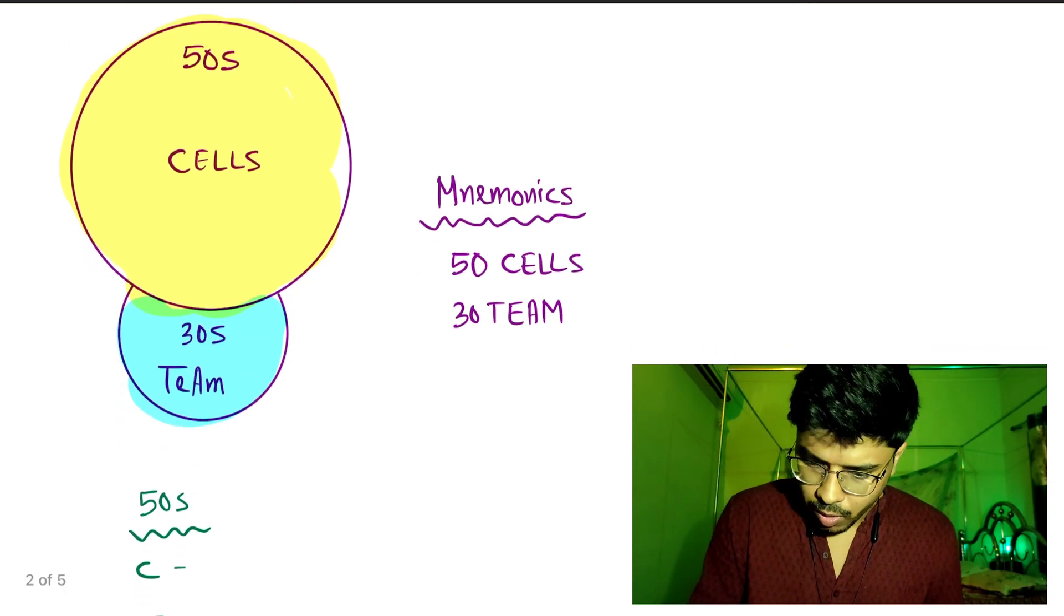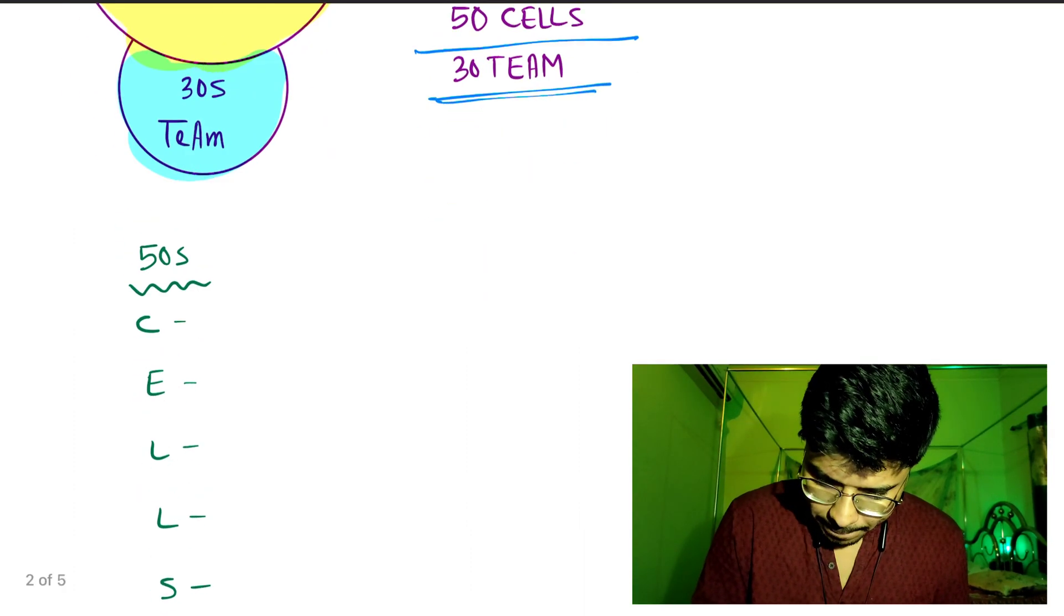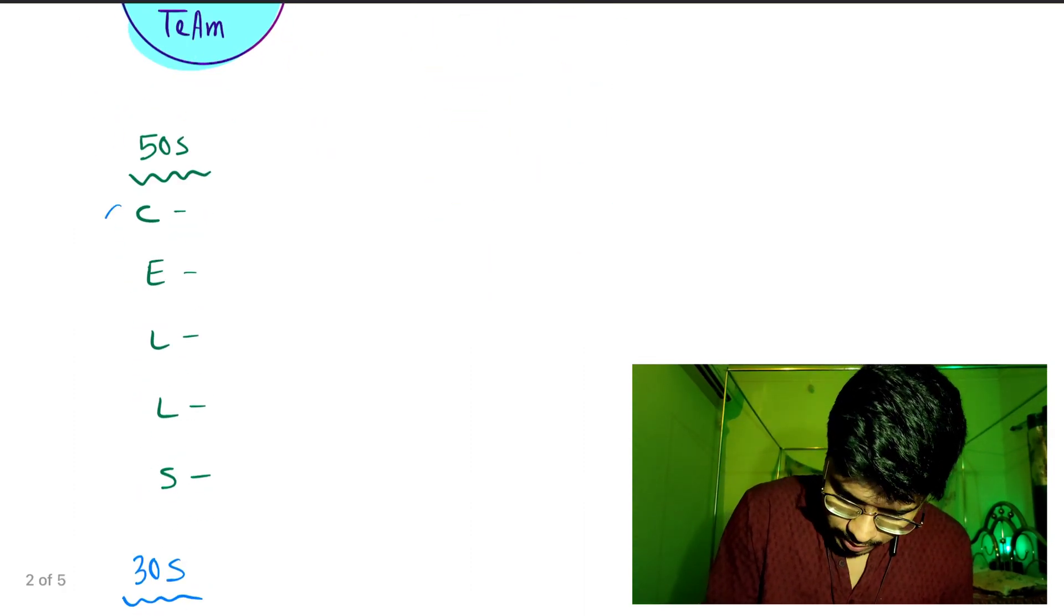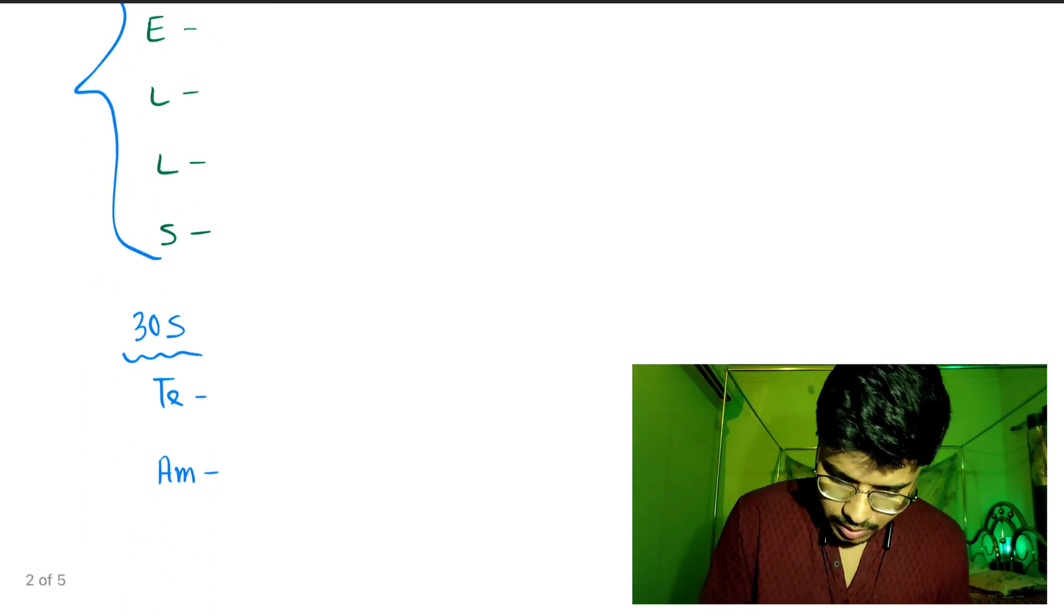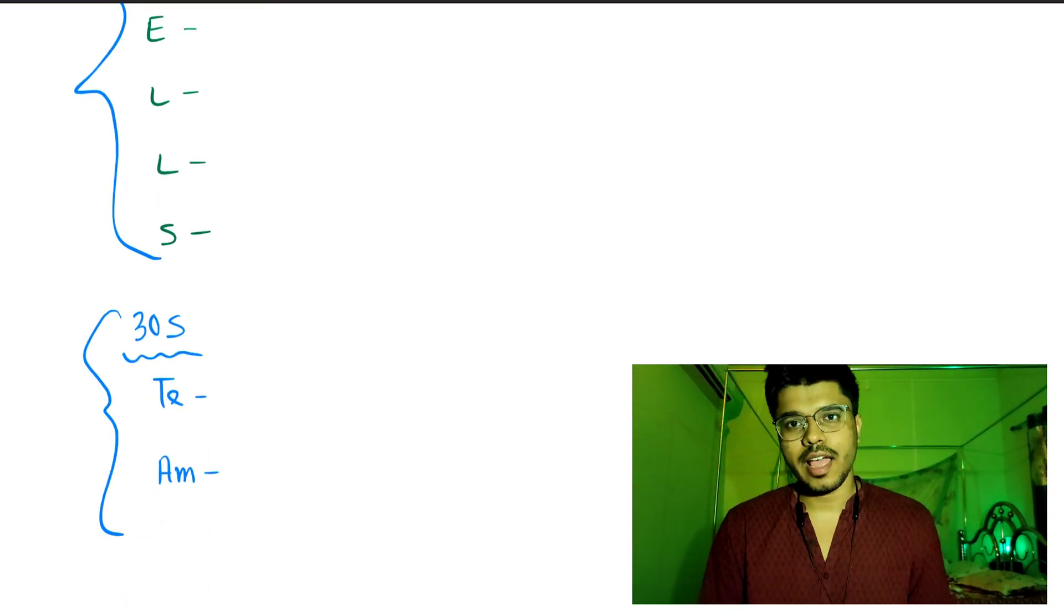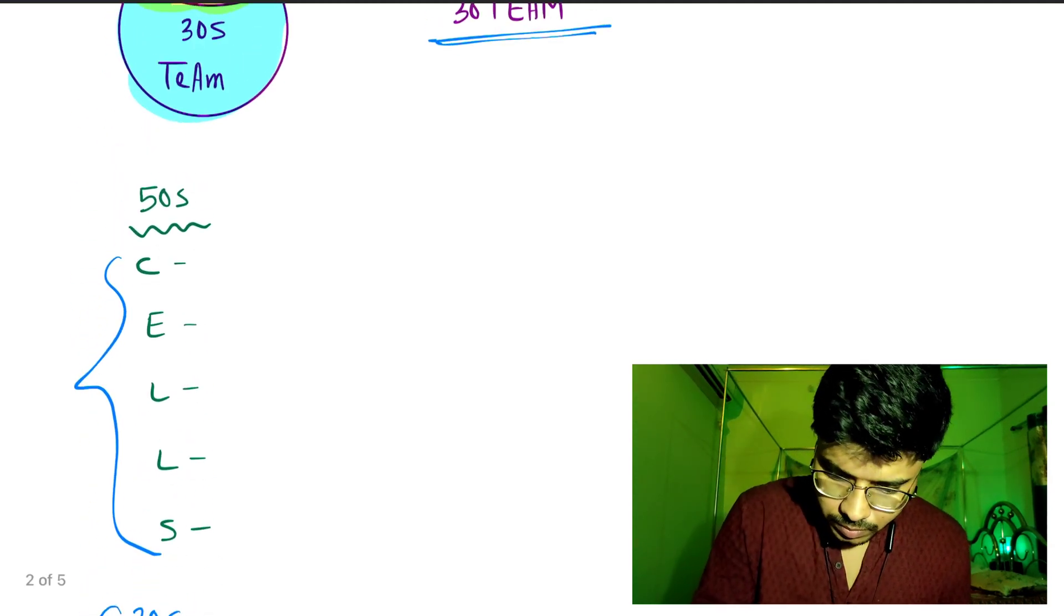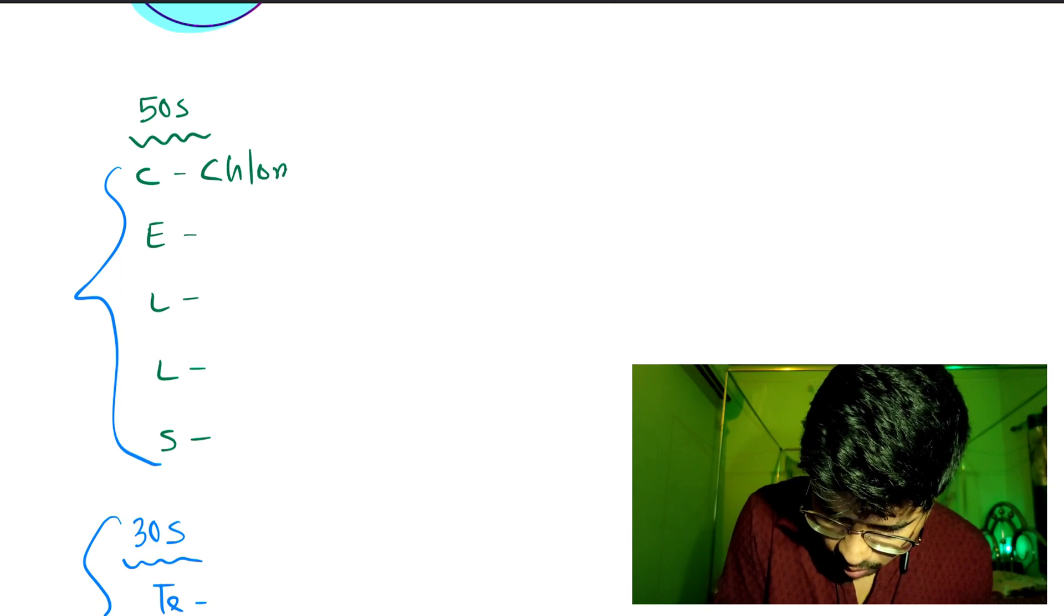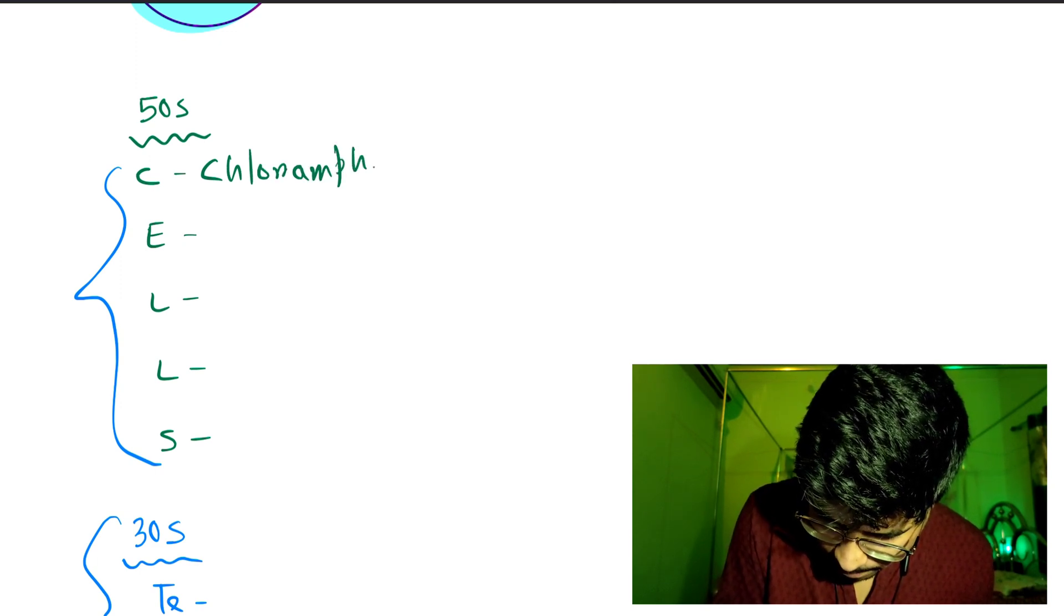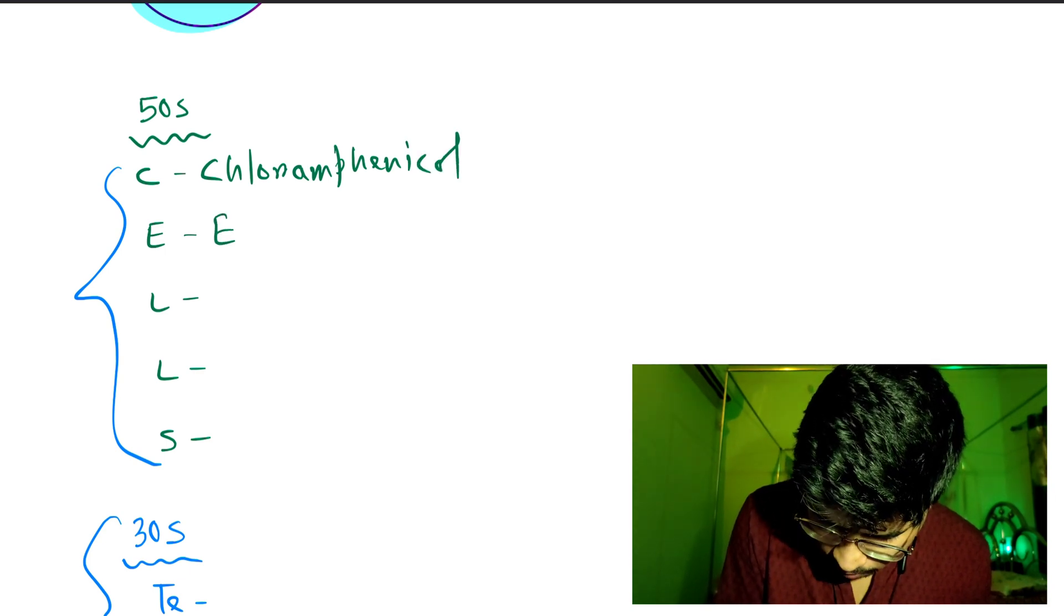Now our mnemonic is 50 CELLS, 30 TEAM. 50 CELLS - these drugs act by inhibiting 50S part of ribosome. 30 TEAM - these drugs act by inhibiting 30S part of ribosome. C for Chloramphenicol. E for Erythromycin.